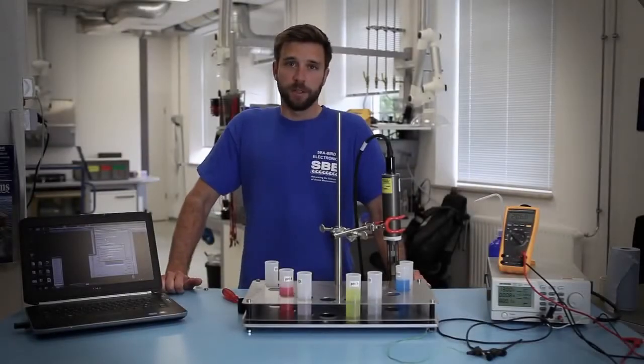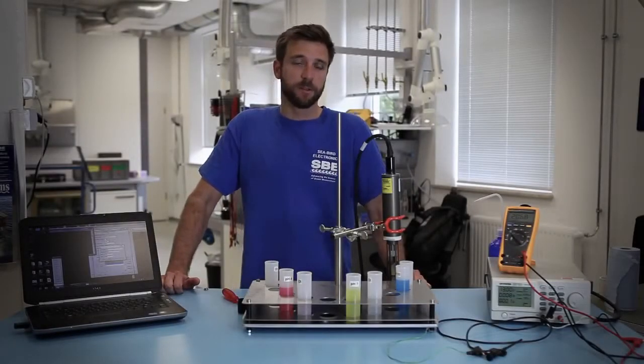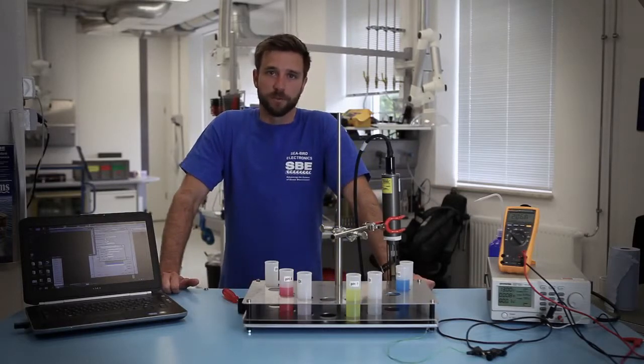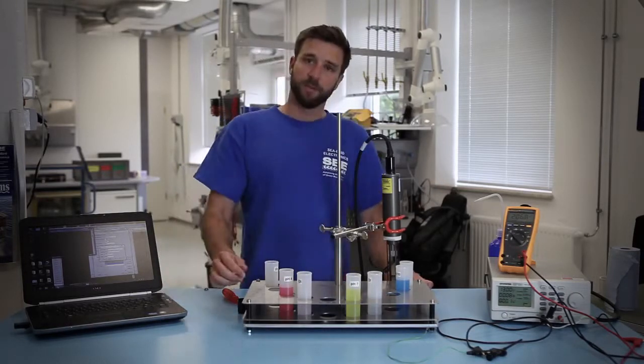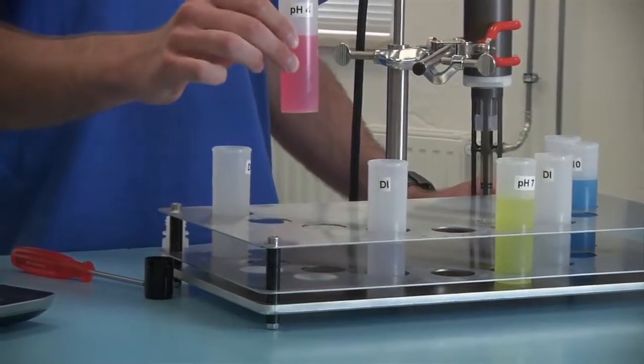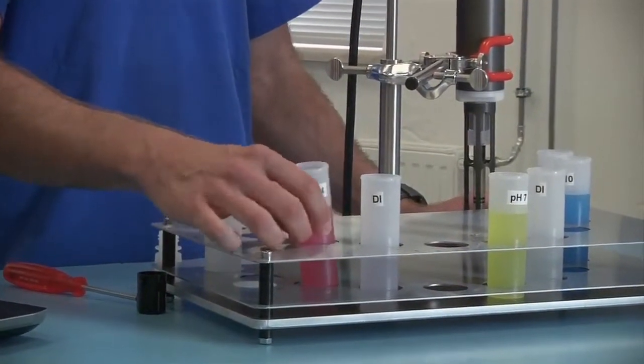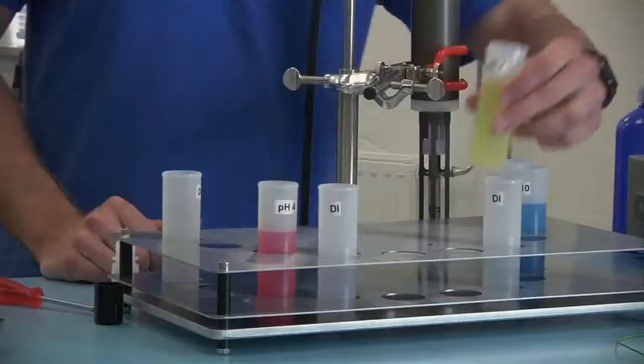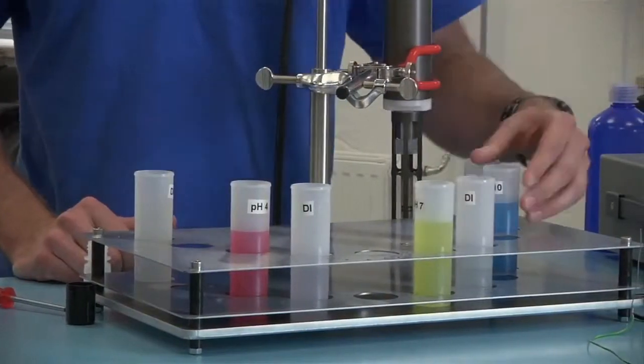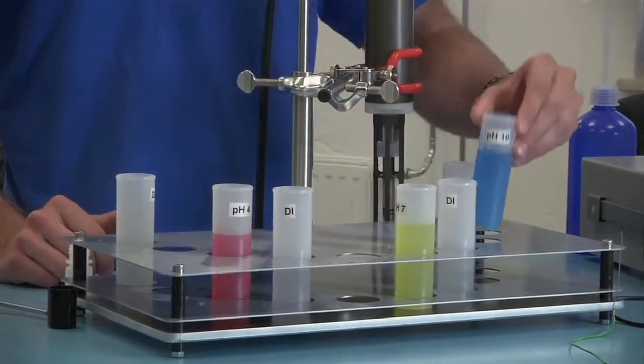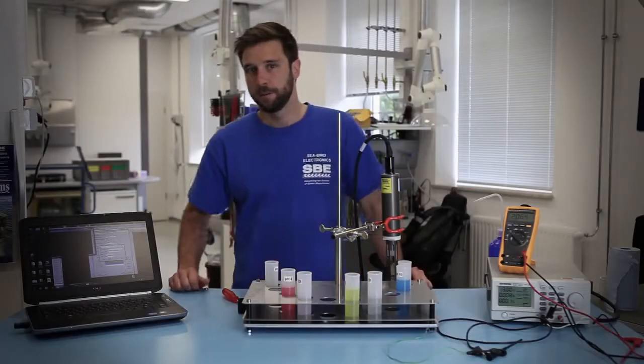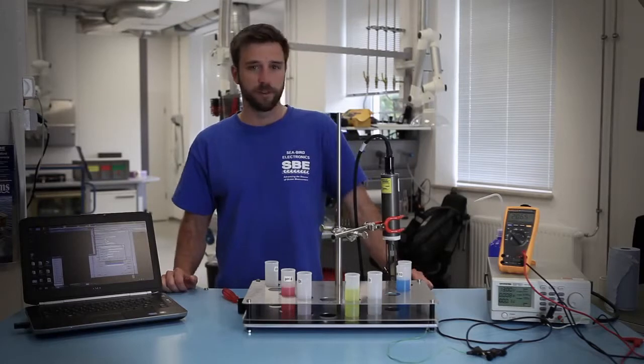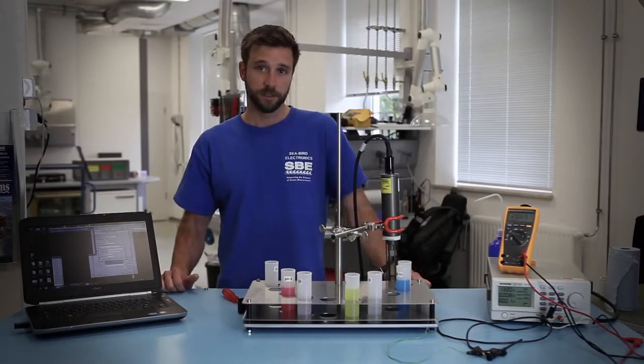Now we're going to be looking at the calibration of the SPE 18 or 27 pH sensor. To calibrate this sensor you'll need a few supplies. You'll need some pH buffer solutions. Here we're using a pH of 4, a pH of 7, and finally a pH buffer of 10. You can use whatever pH you select. You just want to have a little bit of variety in there to get a full range of the sensor.